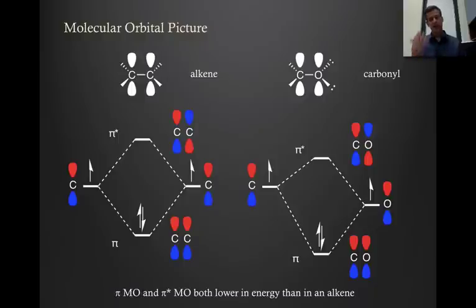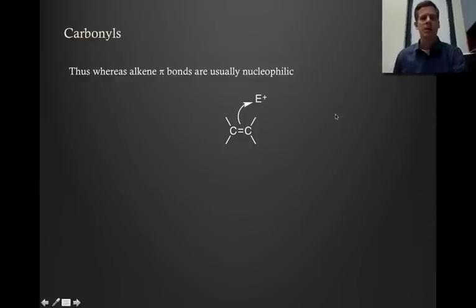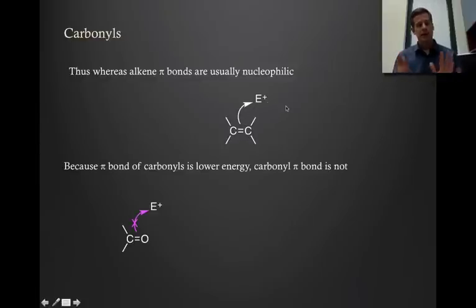Well, that has a significant impact on the reactivity of the carbonyl. So you're now very familiar with the fact that alkene pi-bonds are typically nucleophilic. So you learned a whole lot of chemistry where the alkene double bond will react with an electrophile in this sort of fashion. But because in a carbonyl, the pi-bond is a lower energy, carbonyl pi-bonds are not typically nucleophilic. They are not going to react with electrophiles in that same way that alkenes do. So we're going to see, again, nucleophilic chemistry, not electrophilic.